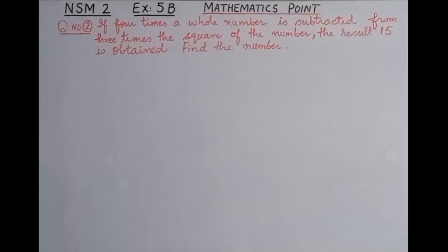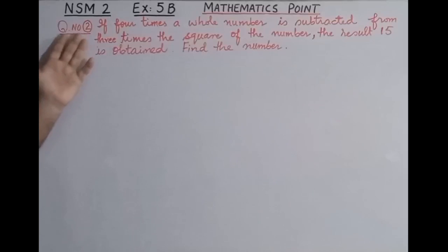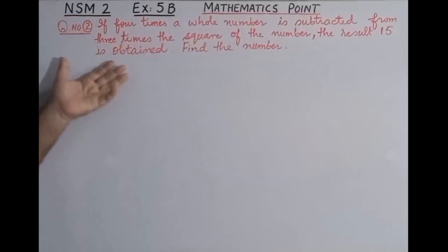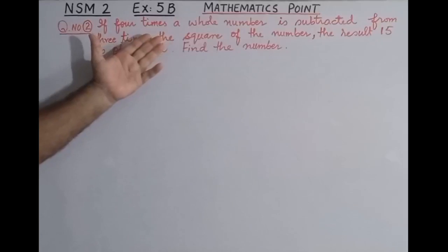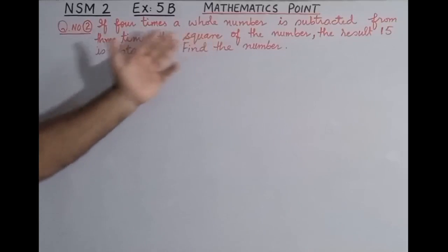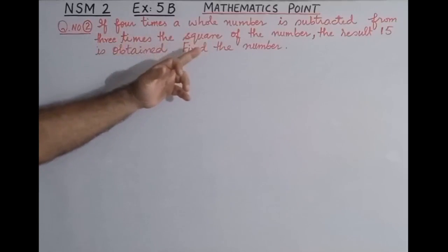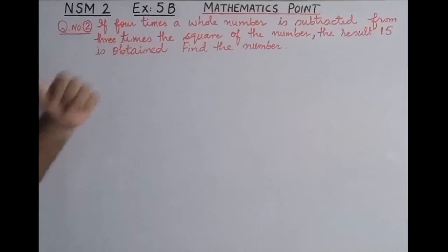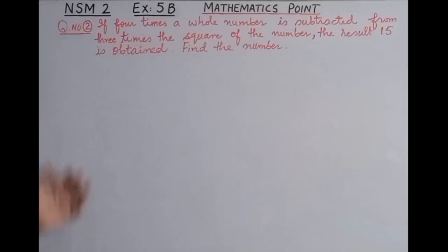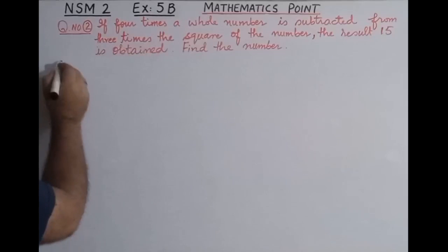Bismillahirrahmanirrahim, Assalamu Alaikum students. In this video we are going to solve question number two, Exercise 5b, New Syllabus Mathematics Book 2. The question is: if four times a whole number is subtracted from three times the square of the number, the result 15 is obtained. Find the number.